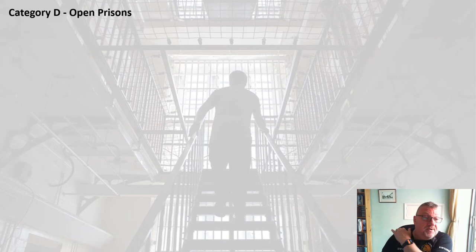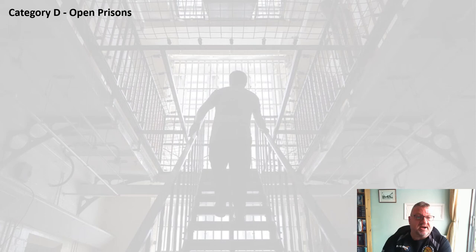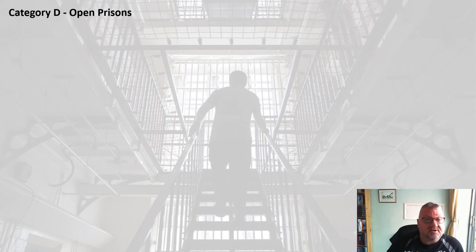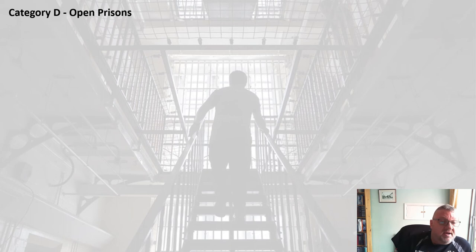Category D prisons are known as open prisons, for prisoners who can be reasonably trusted not to try to escape. Category D prisoners can move freely around the prison, and after completing a risk assessment may be allowed to work outside in the community or have short home visits. Cat C prisoners coming to the end of their sentence are sometimes downgraded to Cat D to get them ready for release. There are 13 open prisons in the UK.